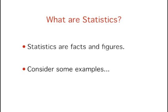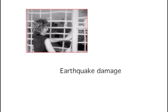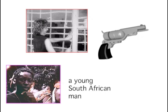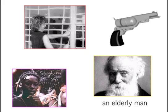What are statistics? Statistics are facts and figures. Consider some examples: the largest earthquake measured 9.2 on the Richter scale; men are at least ten times more likely than women to commit murder; one in every eight South Africans is HIV positive; and by the year 2020, there will be 15 people age 65 and over for every new baby born.